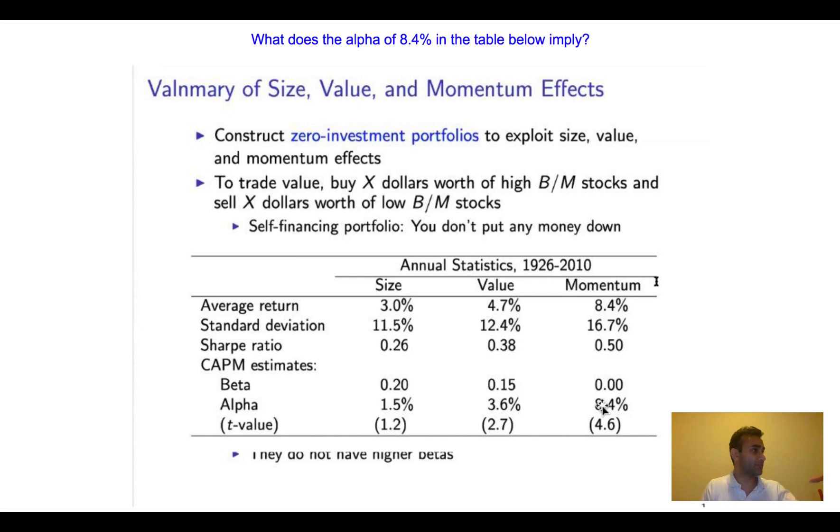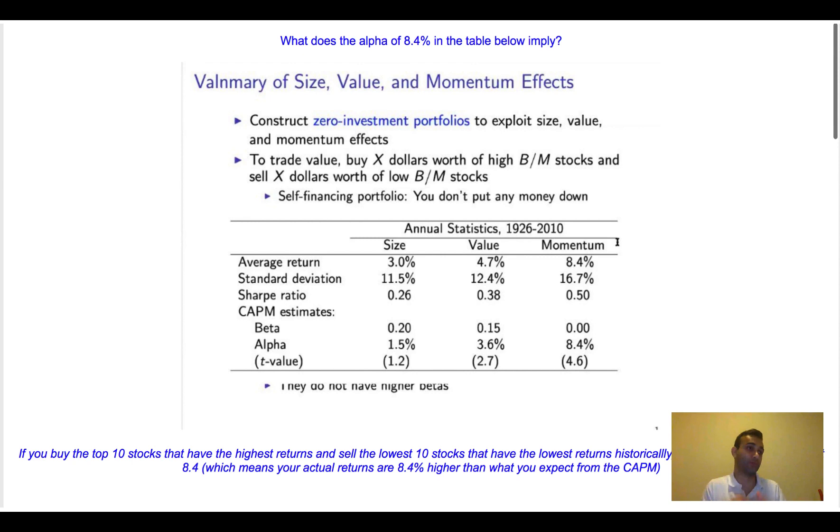Alpha is the difference between the actual return and the theoretical return. And so the 8.4 probably means that I'm getting 8.4 more in reality than is predicted by the model. And just by going through that, I'm showing myself I know the formula. I'm showing myself I know how to derive alpha. I'm showing myself that if I was given a particular return, I would be able to calculate alpha from it.